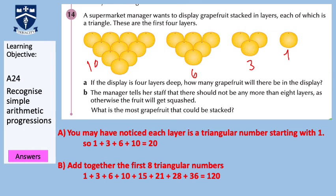For part B, the manager says no more than eight layers. We know each layer follows the triangular number sequence. The first four layers are 1, 3, 6, 10. The next four layers are the next four triangular numbers: 15, 21, 28, and 36 — because we add 5, then 6, then 7, then 8. Adding the first eight triangular numbers together gives 120. So the maximum number of grapefruits that could be stacked is 120.